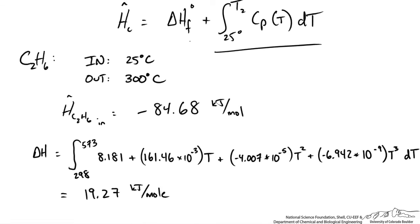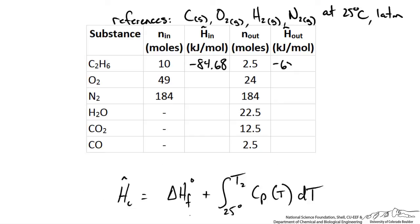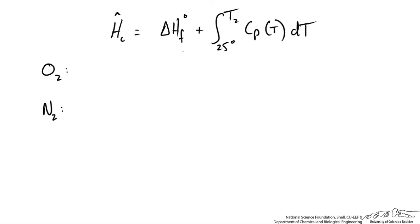That 19.27 kJ/mol is just the sensible heat part of the equation. To get the full specific enthalpy of the ethane outlet stream we must include the heat of formation at the reference state of 25 degrees Celsius. So we take negative 84.68 and add the sensible heat difference of 19.27 to get the enthalpy of ethane at 300 degrees Celsius, which we plug into our table.